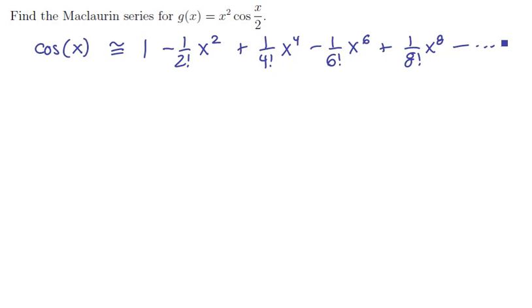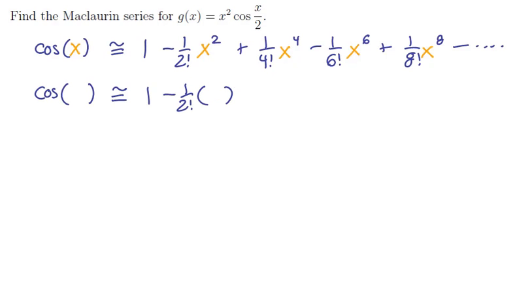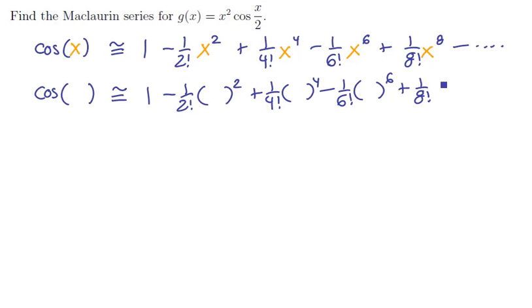Now let's focus on the variable for just a second. We can replace this by anything, so let's actually rewrite this Taylor series but replacing x by just a blank symbol. So cosine of blank would be 1 minus 1 over 2 factorial times blank squared, plus 1 over 4 factorial times blank to the 4th, minus 1 over 6 factorial times blank to the 6th, plus 1 over 8 factorial times blank to the 8th, on down the line.